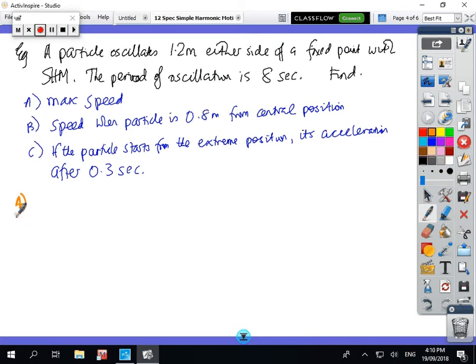So the first thing we need to do: work out what N is. So the period is 2π/N, so N equals 2π/period, which is 2π/8, which is π/4. In radian measures, make sure you're in radians, and that equals about 0.78 radians per second.